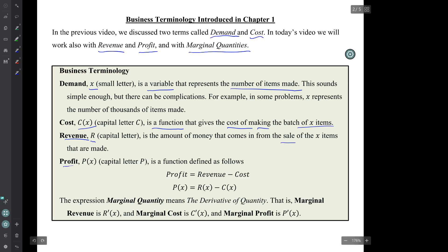What's called the revenue, capital letter R, is the amount of money that comes in from the sale of x items that are made. Then what's called the profit, capital P parentheses x, again capital letter P, is a function and it's defined this way. Profit equals revenue minus cost. That is, the profit function equals the revenue function minus the cost function.